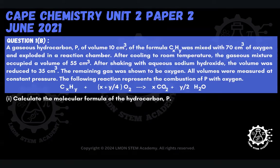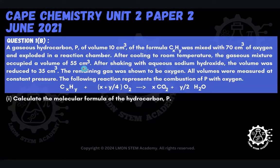This is a combustion analysis question where we're being asked to find the molecular formula of a hydrocarbon. The question says that a gaseous hydrocarbon P, of volume 10 cm³ with the formula CₓHᵧ — which is just our generic formula for hydrocarbons — was mixed with 70 cm³ of oxygen and exploded in a reaction chamber. After cooling to room temperature, the gaseous mixture occupied a volume of 55 cm³. After shaking that mixture with aqueous sodium hydroxide, the volume was reduced to 35 cm³. The remaining gas was shown to be oxygen.